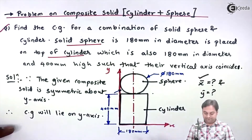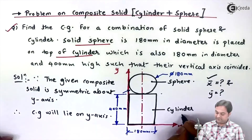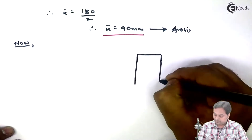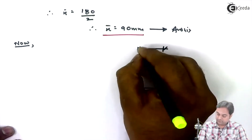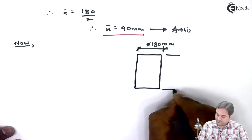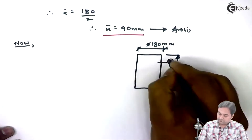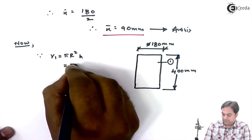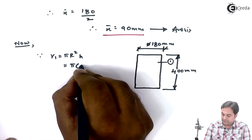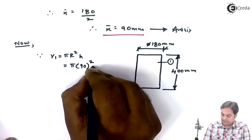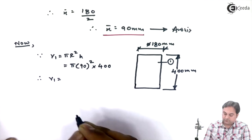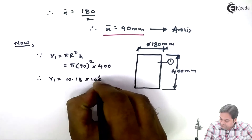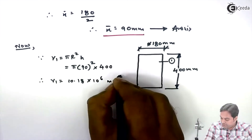The first part is done — X̄ is found. Next, for Ȳ, the cylinder is the first solid and the sphere is the second. The cylinder has diameter 180 mm and height 400 mm. The volume V1 = π R² H = π × 90² × 400, giving V1 = 10.18 × 10⁶ mm³.